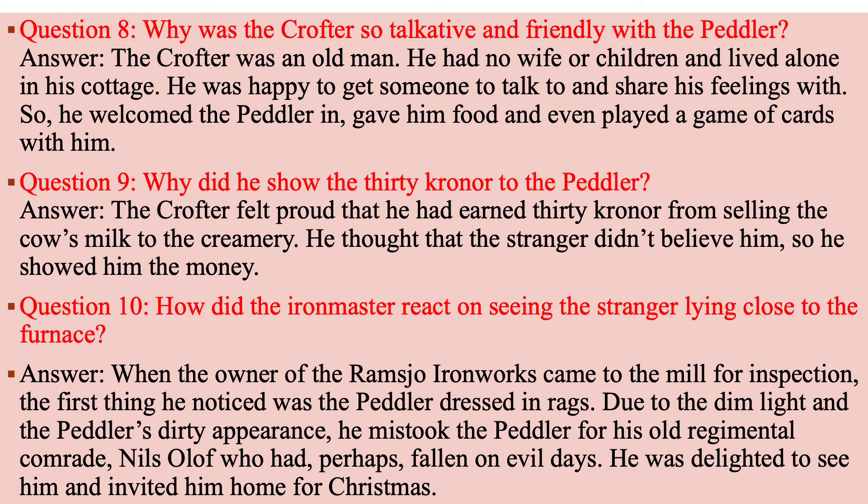Question number nine: Why did he show the 30 kroner to the peddler? Answer: The crofter felt proud that he had earned 30 kroner from selling the cow's milk to the creamery. He thought the stranger didn't believe him, so he showed him the money.